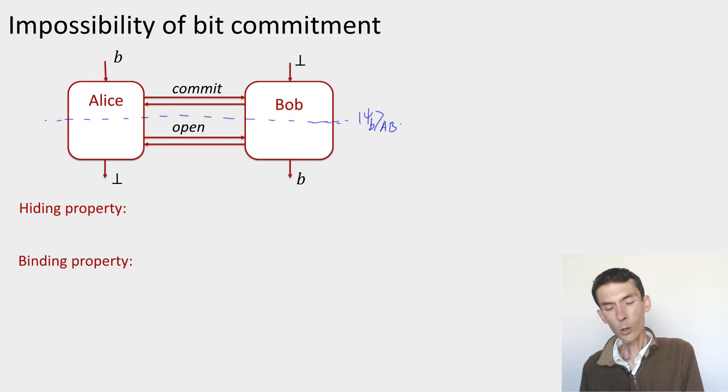Okay, so now let's look at what the security requirements are asking. First, there's the hiding property. The hiding property says Bob should not learn any information about b at the end of the commit phase. What this means is that the state of his whole system should be completely independent of the bit b. Now, Bob's system we can describe by the reduced density matrix rho_b on his system, which is the partial trace with respect to Alice's system of the state psi_b, which is on both of them.